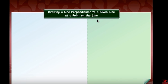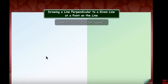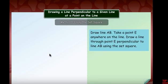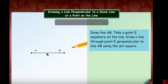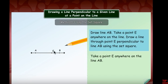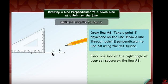Now we will understand how to draw a perpendicular to a given line at a point on the line. Method one: using the set square. Draw a line AB and take a point E anywhere on the line. To draw a line through E perpendicular to AB, take a scale and draw line AB, mark point E on the line, then place the set square exactly on the line and slide it to point E.